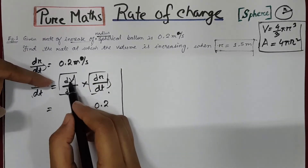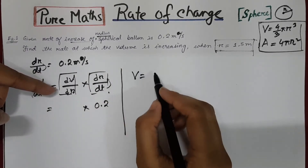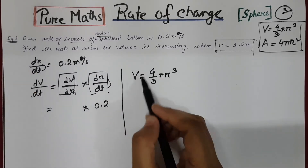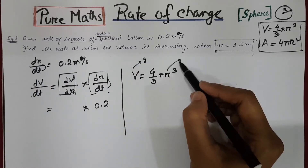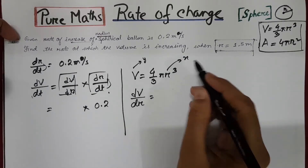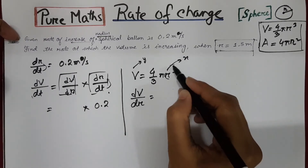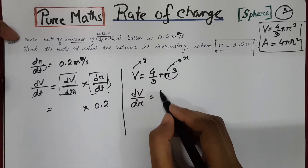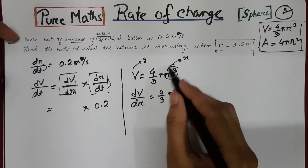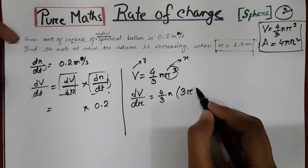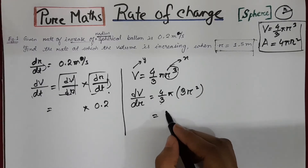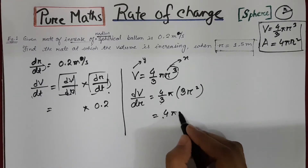Since we need dV/dr, I am writing the formula of volume: 4/3 π r cubed. Volume is like y and radius is like x, so we need to find dV/dr — differentiate the terms of r only. The values 4/3 π will stay there. By differentiation, r cubed becomes 3r squared, so if we cancel out the 3, it becomes 4π r squared.